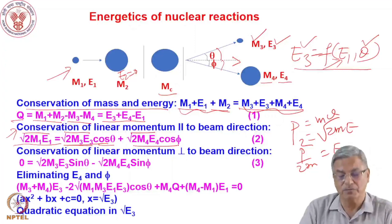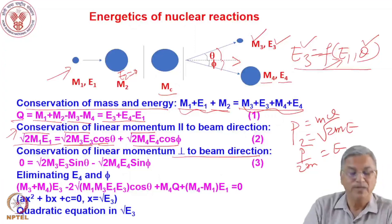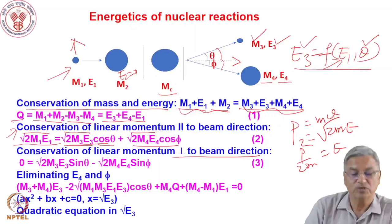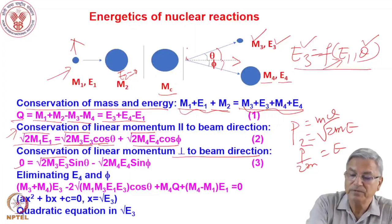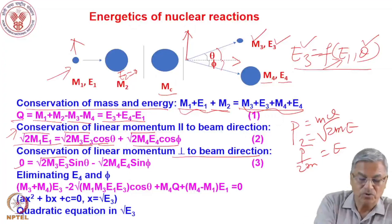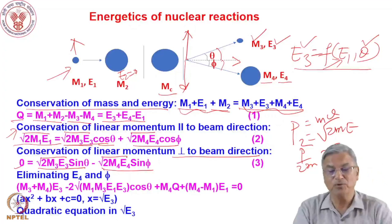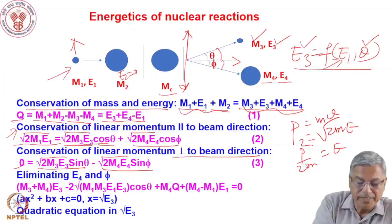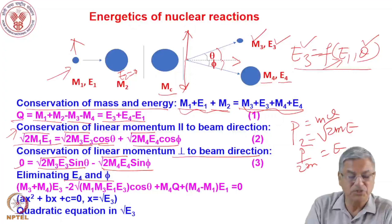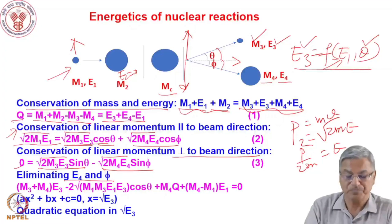Linear momentum is also conserved perpendicular to the beam direction. Perpendicular to the beam there is no momentum for the projectile, so: 0 = root(M3·E3)·sin(theta) − root(M4·E4)·sin(phi), where the negative sign appears because the heavy residue moves in the negative direction. These are three equations, and we can eliminate E4 and phi from them to get a relationship between E3, M1, M2, M3, M4, E1, and theta.